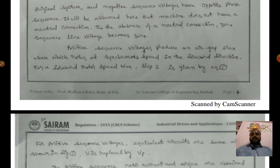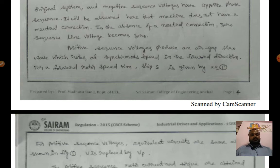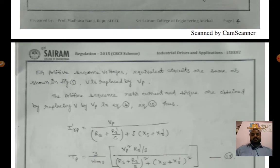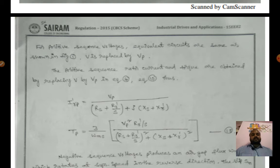Positive sequence voltages produce the air gap flux wave which rotates at synchronous speed in the forward direction — the sequence being R-Y-B. Negative sequence means any two phases are interchanged, which changes the rotation direction. In the forward rotor speed ωm, slip is s. The positive sequence equivalent circuit is as shown in the earlier figure.